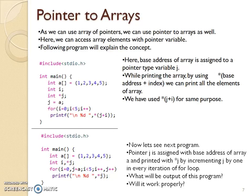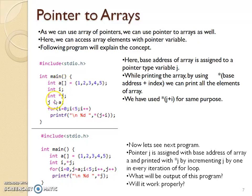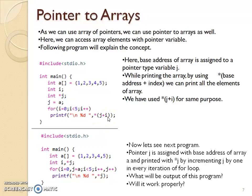Now what is pointer to arrays? Arrays are declared with 5 values and their base address is assigned to a pointer type variable. Keep in mind the data type of the array and the pointer variable holding the address of this array must match each other. With the printf statement, we print the value available at base address plus i. As we saw in the previous program, this will give the output 1, 2, 3, 4, 5 in sequence.